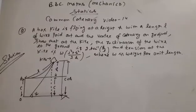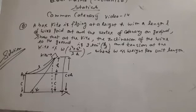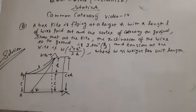In video number 14, the question is: a box kite is flying at a height h with a length l of wire paid out. The vertex of the catenary on ground so that at the kite the inclination of wire at the ground is 2 tan inverse h upon l and the tension of kite is w(l square plus h square) upon h where w is the weight per unit length.